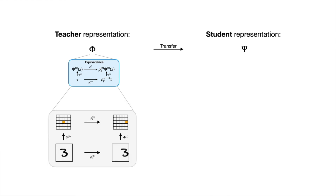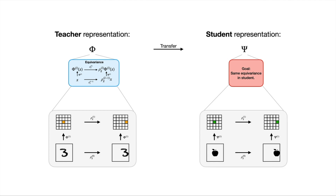If we shift the input image, we expect an equivalent representation to be shifted as well. The effect on the input image or the feature map is determined by the group representation rho, which for example expresses the shift operation applied to the image. This equivalence is what we want to capture and transfer to the student independent of architecture or task.